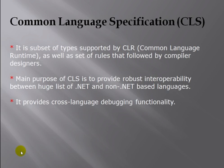The next point is Common Language Specification (CLS). CLS is a subset of types supported by the CLR, as well as a set of rules that language and compiler designers must follow. The purpose of CLS is to provide robust interoperability between .NET languages, including the ability to inherit classes written in one .NET language into other .NET languages, and even cross-language debugging.